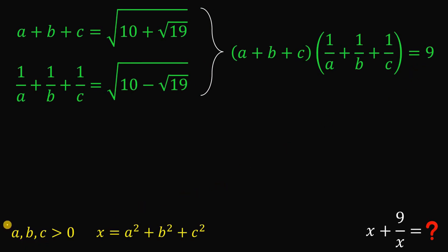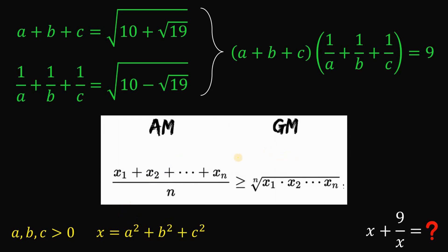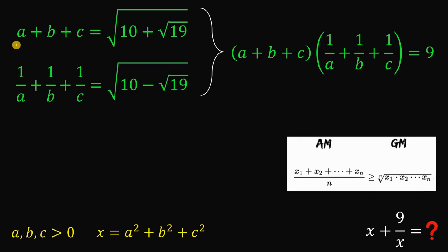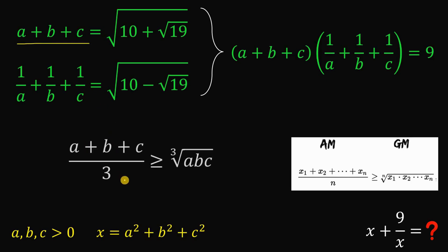What we're going to do next is use the fact that A, B, and C are all greater than 0. Because of this condition, we can use what we call the AM-GM inequality — the arithmetic mean of some positive real numbers is always greater than or equal to their geometric mean, and they are equal if x₁ equals x₂ equals ... equals xₙ. Using this concept, the arithmetic mean of A plus B plus C is always greater than or equal to the geometric mean of A, B, and C. So A plus B plus C over 3 is greater than or equal to the cube root of ABC.